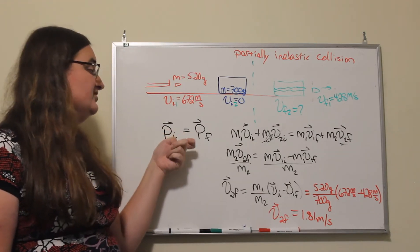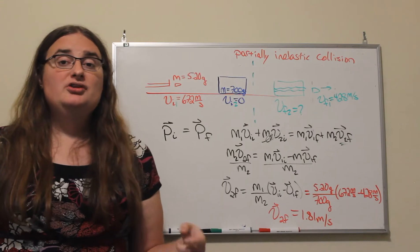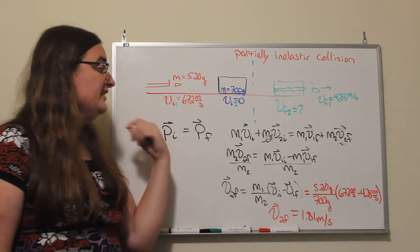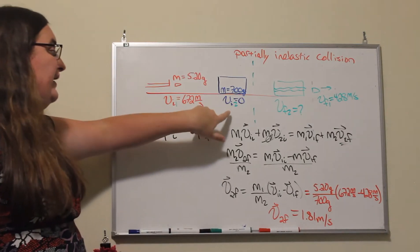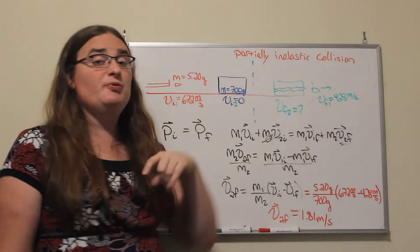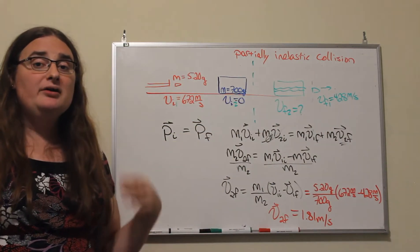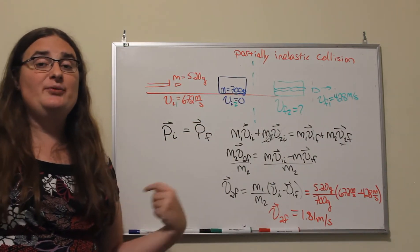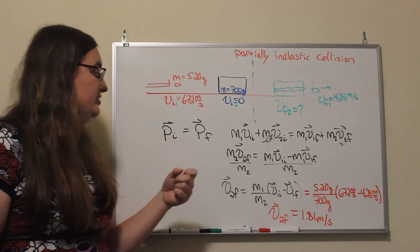For any collision we can always conserve the momentum. For the case of a partially inelastic collision we have equal numbers of objects before and after, but we still only have one equation that we can work with.